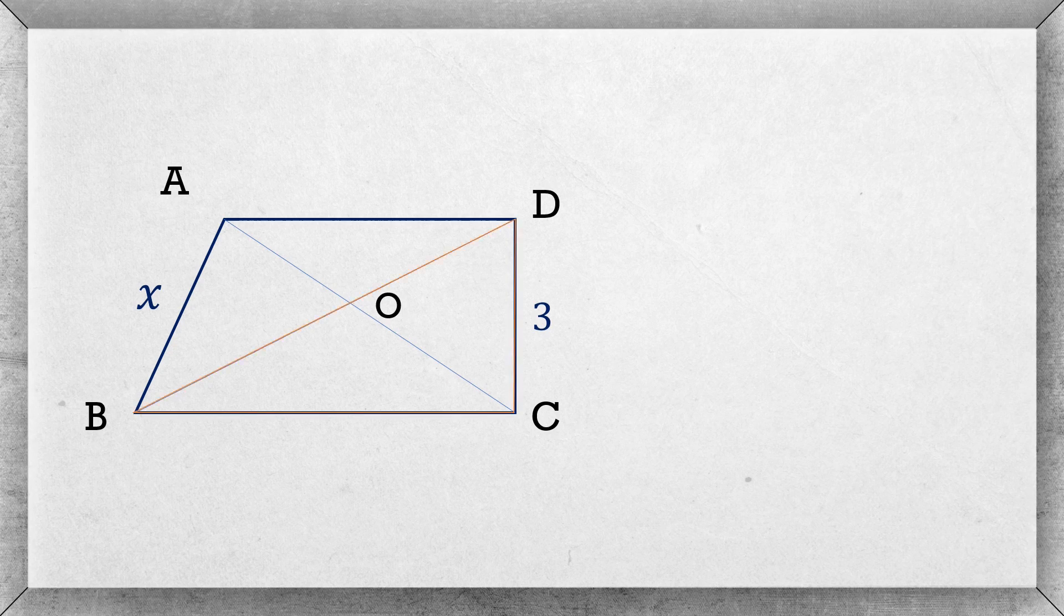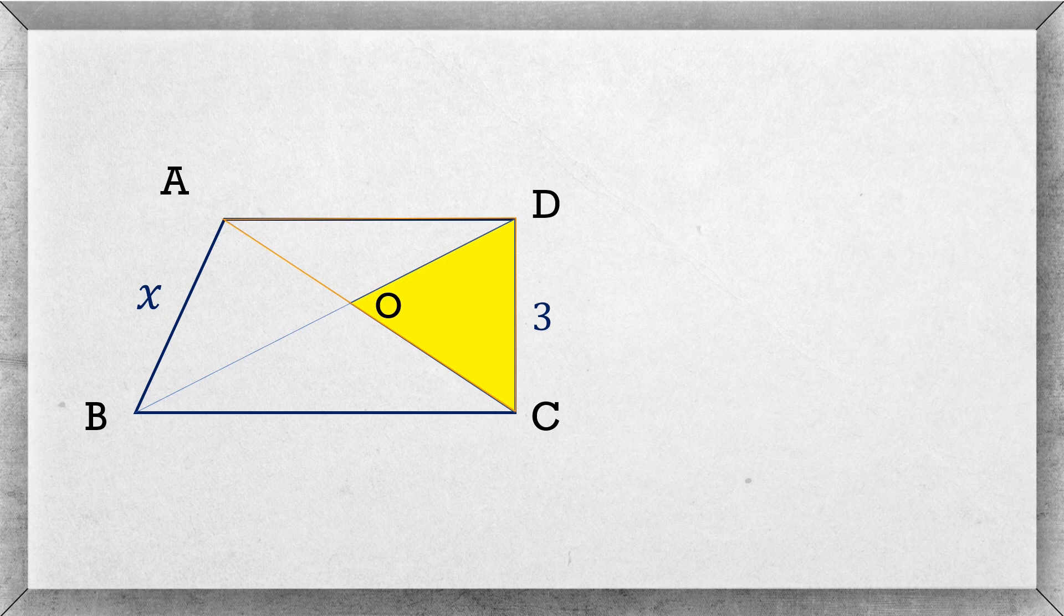Now see that the area of triangle BCD is the sum of triangles BOC and COD. Similarly, triangle ACD is the sum of triangles AOD and COD. Here the area of triangle COD is common for both triangles BCD and ACD.